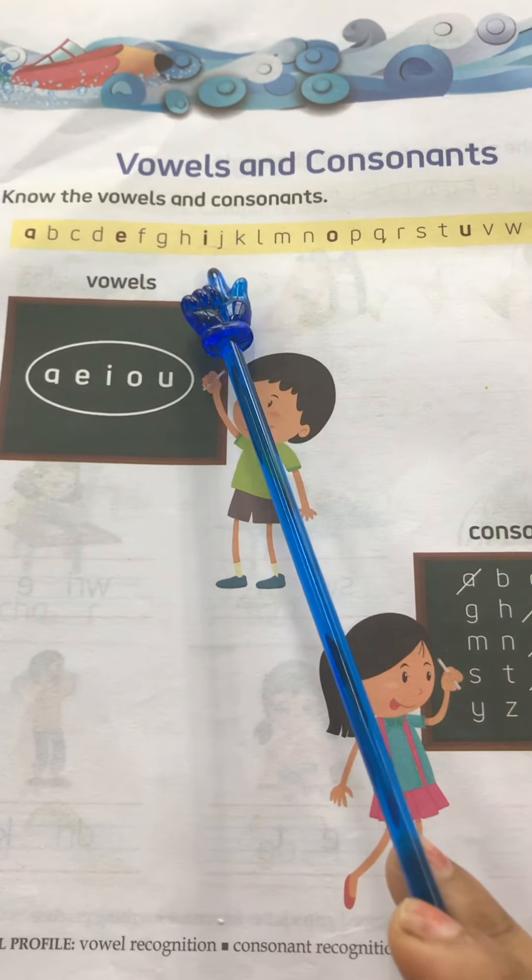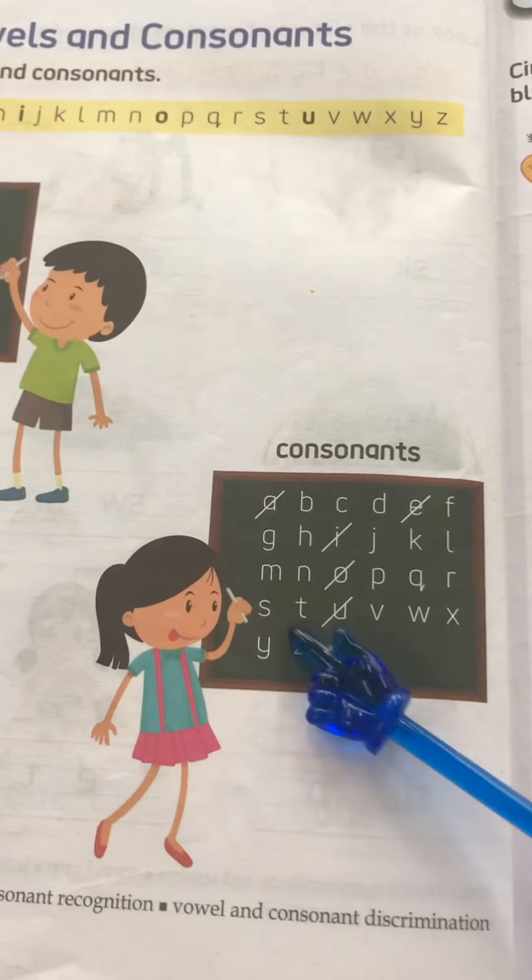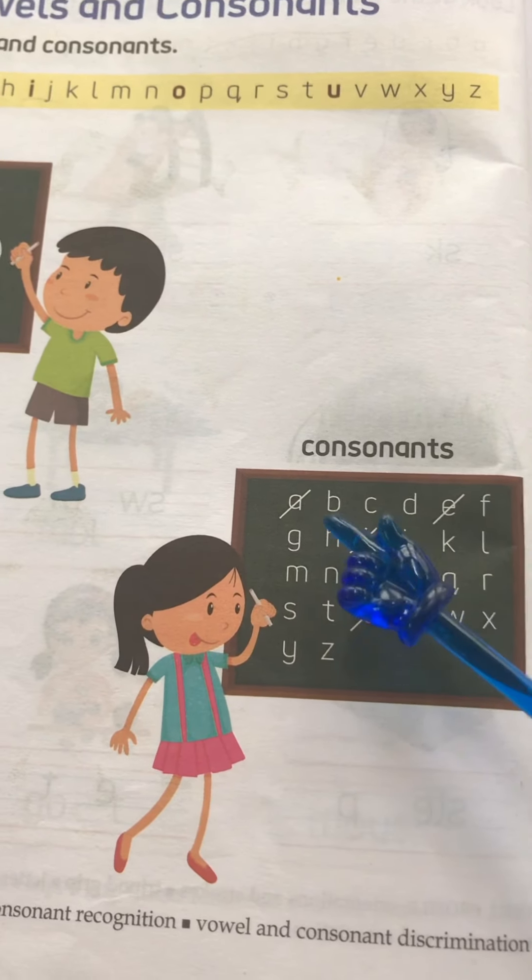A, E, I, O, U — these are vowels. Except A, E, I, O, U, the rest of the letters are consonants. See here, all the vowels are marked, and the consonants are the rest of the letters.